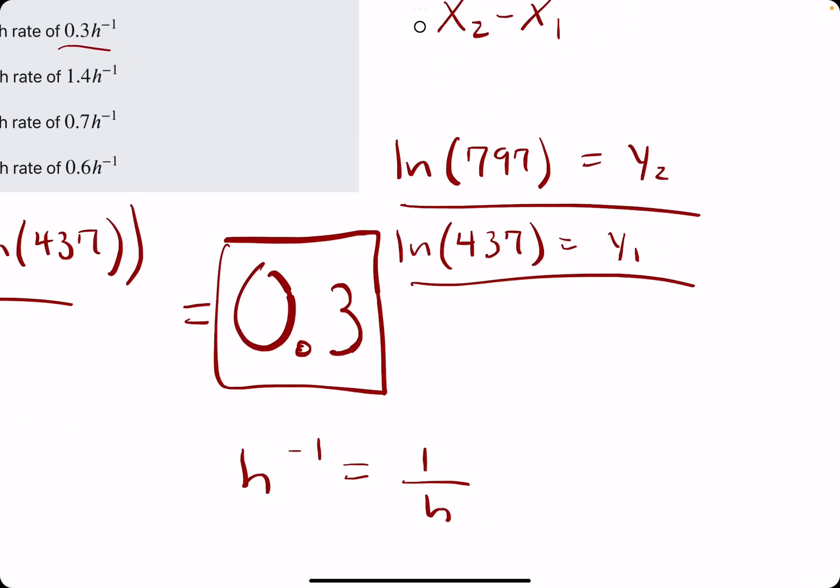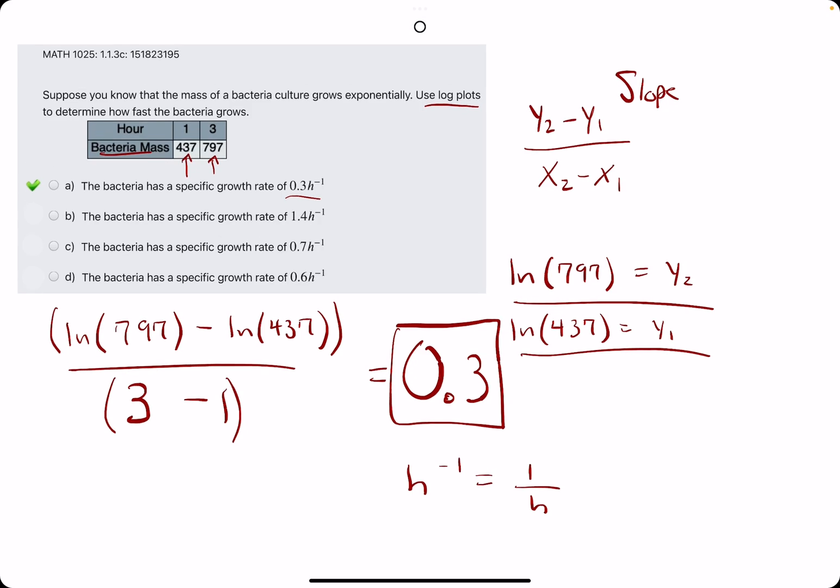It's just 1 over h because what they're saying is the bacteria mass is growing at 0.3 per hour. It's almost like saying miles per hour. It's always like miles over hour, and so hour is in the bottom. It's kind of that same idea, but represented in a terrible way.